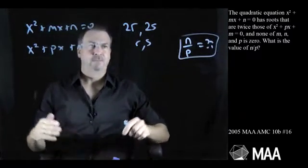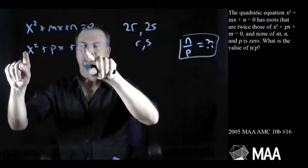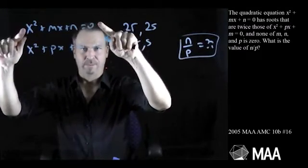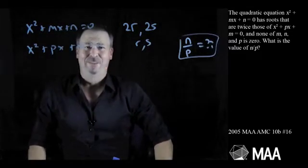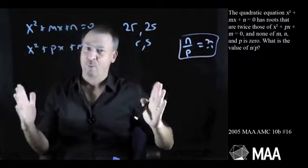Part of me says I should just use the quadratic formula. Work out the quadratic formula for this equation and for that one, and see how one formula is double the other. Maybe something magical will happen. That feels awfully hard, though it might work.